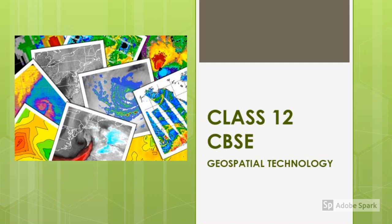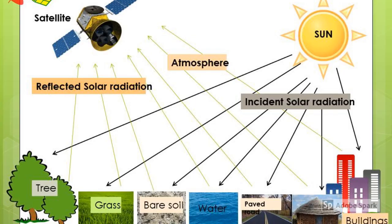Remote sensing deals with inventory, monitoring and assessment of natural resources through analysis of data obtained from remote sensing platforms. Remote sensing measures energy such as ultraviolet, infrared, and microwave, which cannot be perceived by human vision. The Sun is the principal source of electromagnetic energy; Earth receives only 150 millionth of total solar energy, and 46% of solar energy reaching the Earth falls in the visible region of the electromagnetic spectrum.